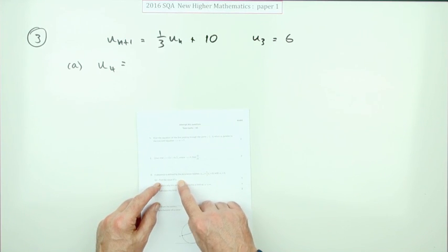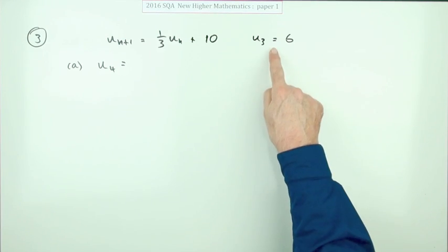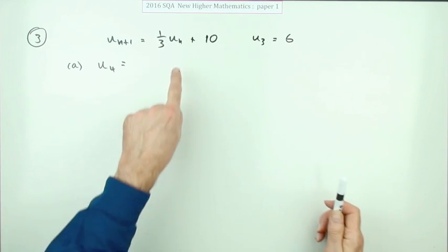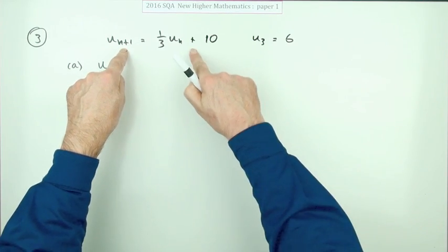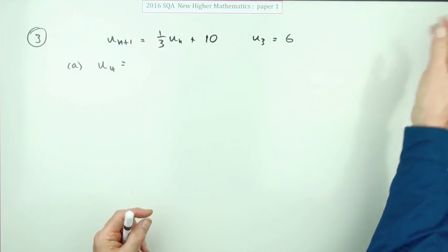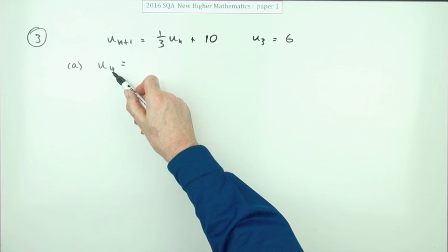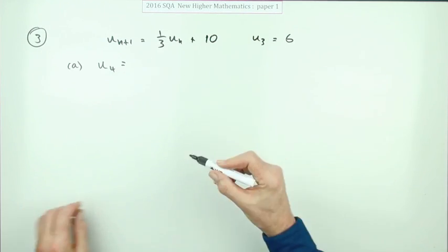First part simply says what's the value of the fourth term given that it states here the third term is six. Well, this recurrence relation doesn't tell you what any particular term is, it only tells you what the next term is. That's ideal. If I want the fourth term, I need to know the third term, and there it is.